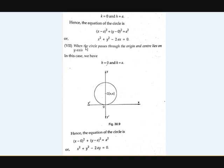The seventh case: the circle passes through the origin and the center lies on the y-axis. This is the inverse of the previous case. Here x minus 0 whole square becomes x squared, and we get y minus a whole square, so the equation is x squared plus y squared minus 2ay equals zero.